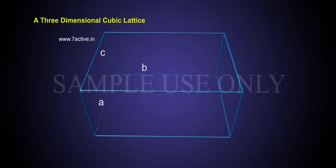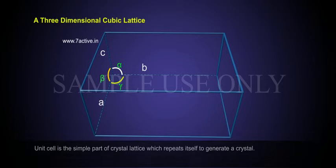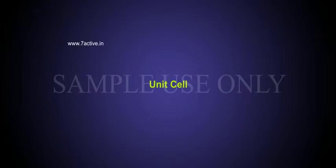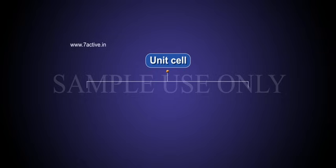Unit cell is the simplest part of crystal lattice which repeats itself to generate a crystal. There are two types of unit cells: primitive and centered.